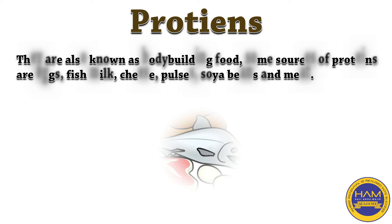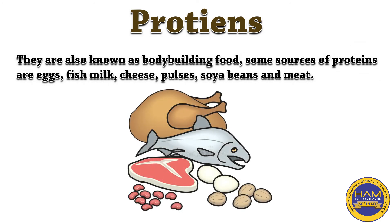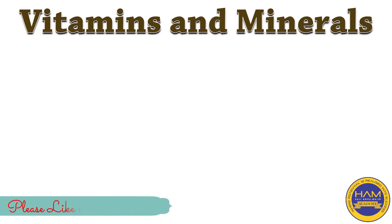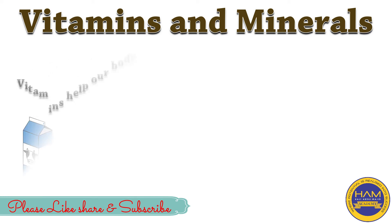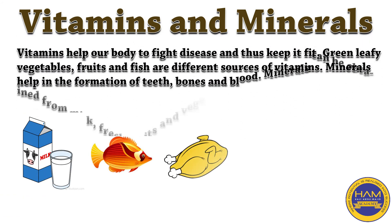Next are proteins. Proteins are essential for the growth of our body — हमारे शरीर के growth के लिए essential चीज protein है। They are also known as body building food — इसी वजह से इन्हें body building food भी कहा जाता है। Their sources are eggs, fish, milk, cheese, pulses, soya beans and meat.